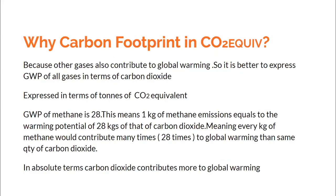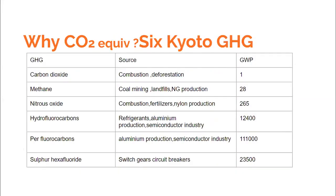Why do we use 'CO₂ equivalent' rather than simply CO₂? It's because not only CO₂, but other gases also contribute to carbon footprint. As agreed during discussions of the Kyoto Protocol, six gases are considered: carbon dioxide, methane, nitrous oxide, hydrofluorocarbons, perfluorocarbons, and sulfur hexafluoride. The global warming potential of methane, for example, is 28 times that of CO₂. So we need to consider the emissions of methane, nitrous oxide, and all these gases when doing carbon footprint calculations.